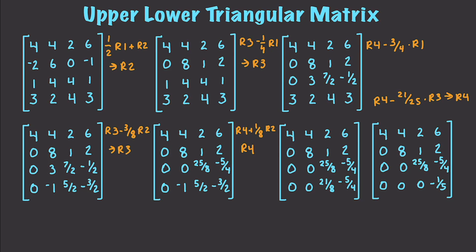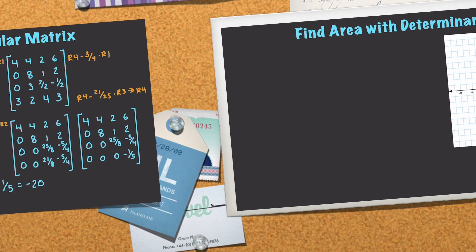And I'm going to be able to come in here and calculate the determinant for this by just taking the diagonal and multiplying those values. So this is going to be 4 times 8 times 25 over 8 times negative one fifth. And if I do that, I get negative 20. So there you go. That is how we can go and create an upper triangular matrix and use it to find the determinant.